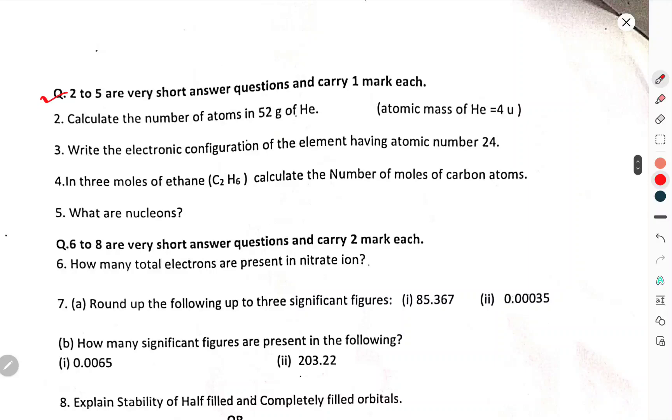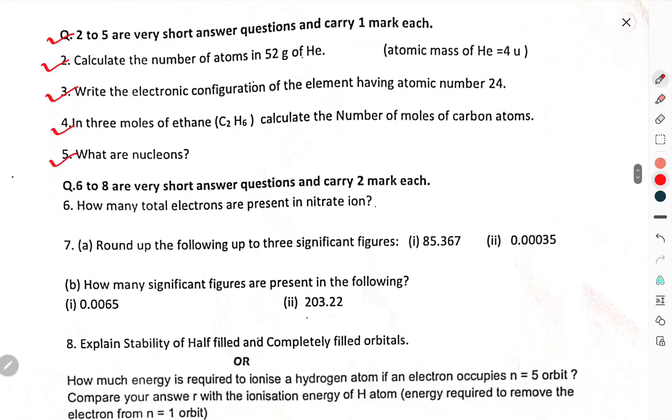Question number 2 to 5 are very short answer questions, carrying 1 mark each. Calculate the atoms in 52 grams of helium. Write the electronic configuration of element having atomic number 24. In 3 moles of ethane C2H6, calculate the number of moles of carbon atoms. What are the nucleons?